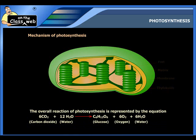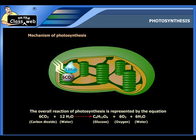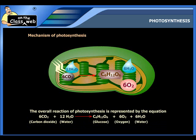According to the mechanism of photosynthesis, the chlorophyll in the chloroplast traps the light to produce glucose. During the entire reaction of photosynthesis, six molecules of carbon dioxide and twelve molecules of water react to form a glucose molecule, six molecules of oxygen, and six molecules of water.